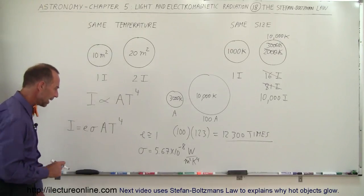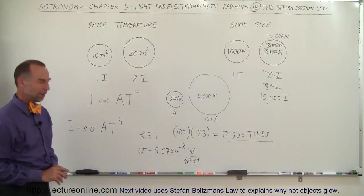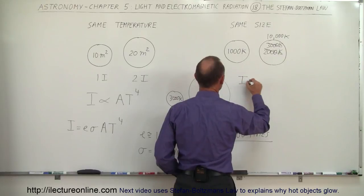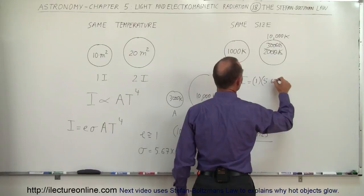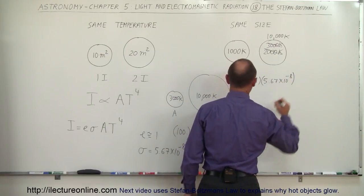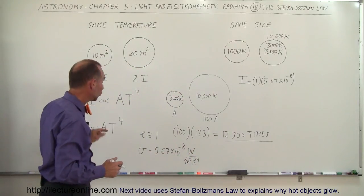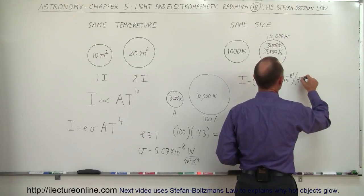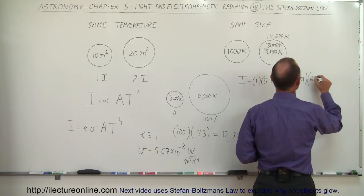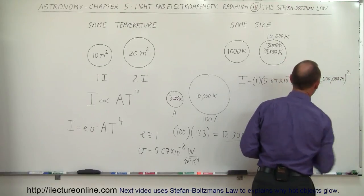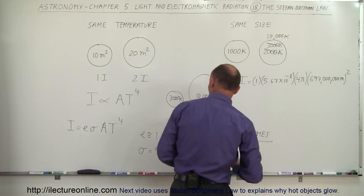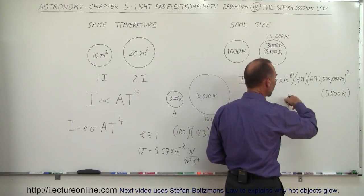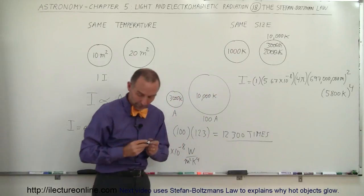We could do that for the sun. How much energy does the sun put out? I equals emissivity of 1, the constant 5.67 times 10 to the minus 8, and the intensity is going to be in watts. The surface area would be 4 pi times the radius, and the radius is 697 million meters. We have to square that, 4 pi r squared. Then we multiply times the temperature, which is about 5,800 Kelvin. Don't forget to raise it to the fourth power.